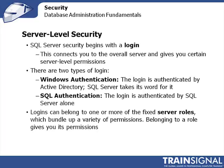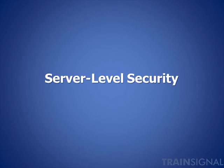SQL Server Security all begins with a login. This connects you to the overall server and gives you certain server-level permissions. There are two possible types of login. A Windows authentication login is authenticated either by the local computer or, more commonly, by Active Directory — SQL Server just takes its word for it. SQL authentication, on the other hand, is authenticated directly by SQL Server. That's useful for instances where you need to authenticate to a server that isn't part of a domain or you aren't part of its domain. Logins can belong to one or more of the fixed server roles, which bundle up a variety of permissions that apply to the entire server. Belonging to a role gives you the permissions of that role.